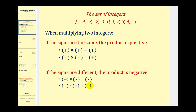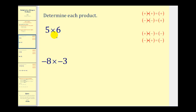Let's look at some examples. The first one we should already know: five times six is equal to thirty. But it does fit the rule of a positive times a positive equals a positive.